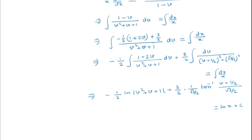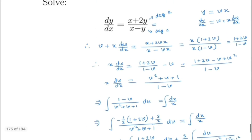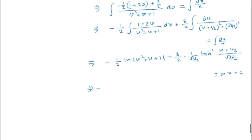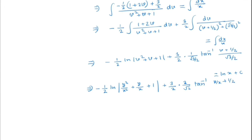By putting the value of v = y/x, we get our required answer. Substituting v = y/x: -½ · ln(y²/x² + y/x + 1) + √3 · arctan[(2y/x + 1)/√3] = ln(x) + C, which is the general solution.